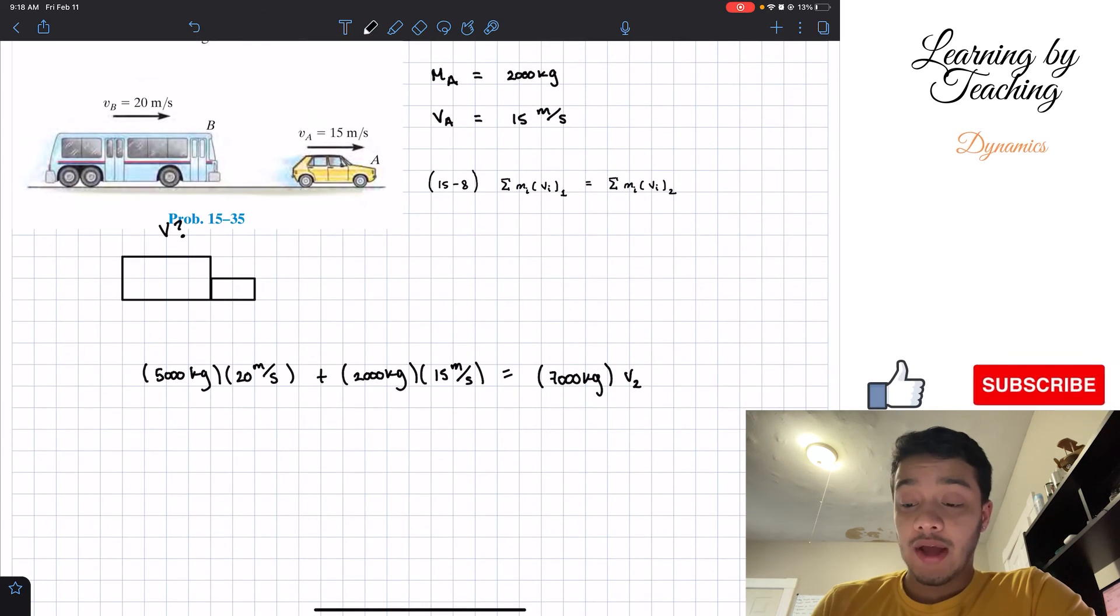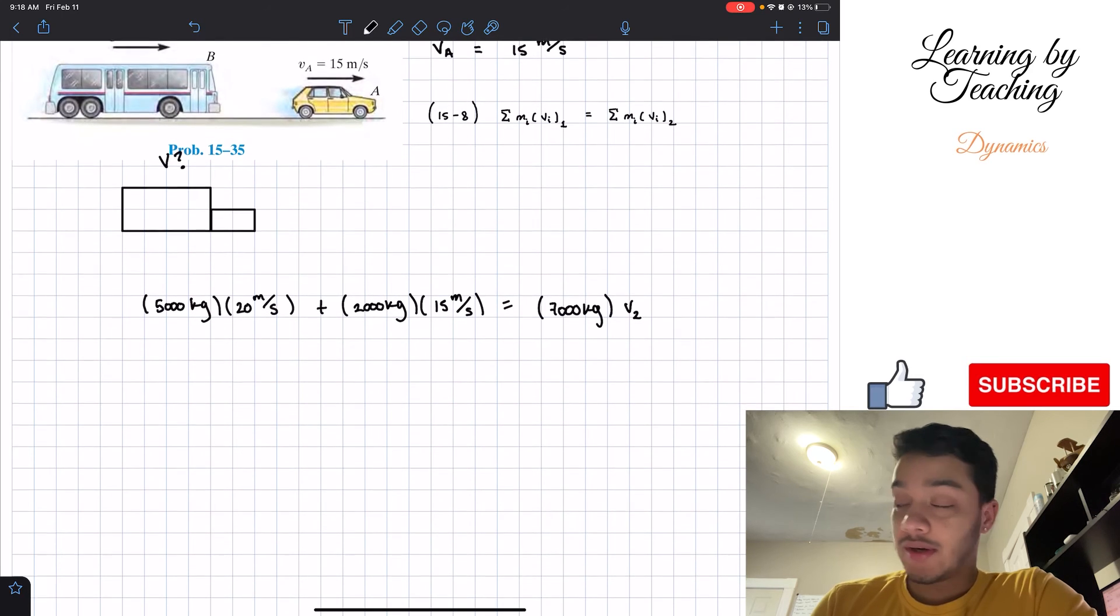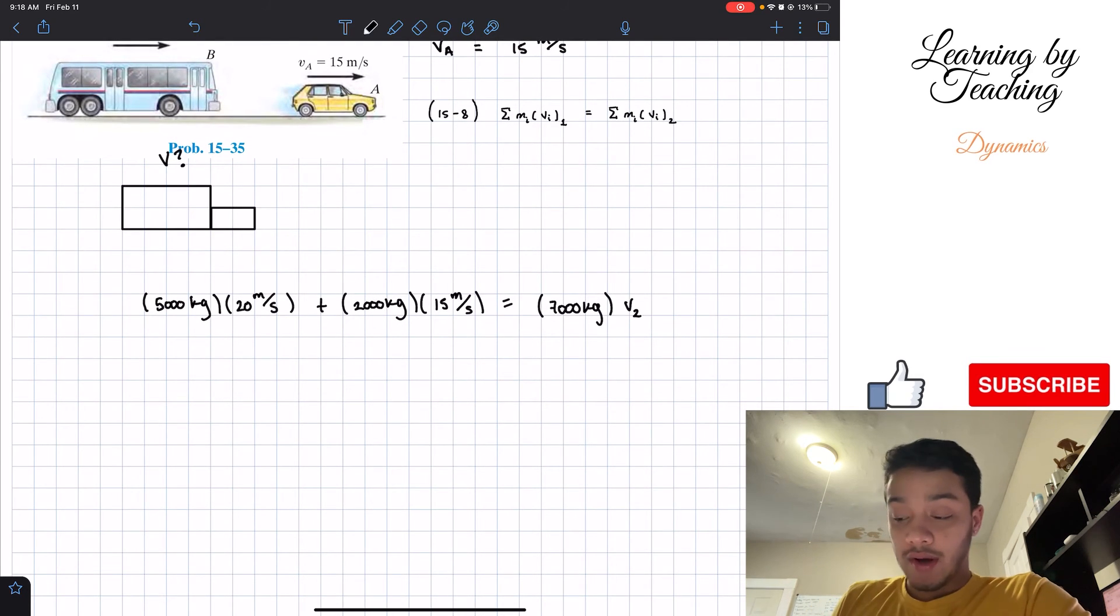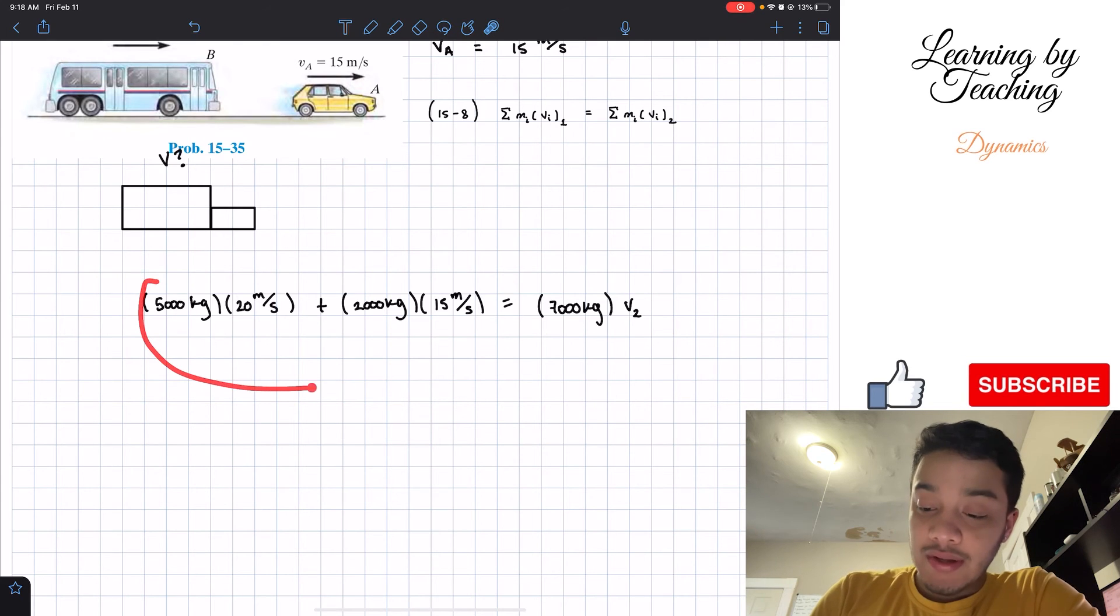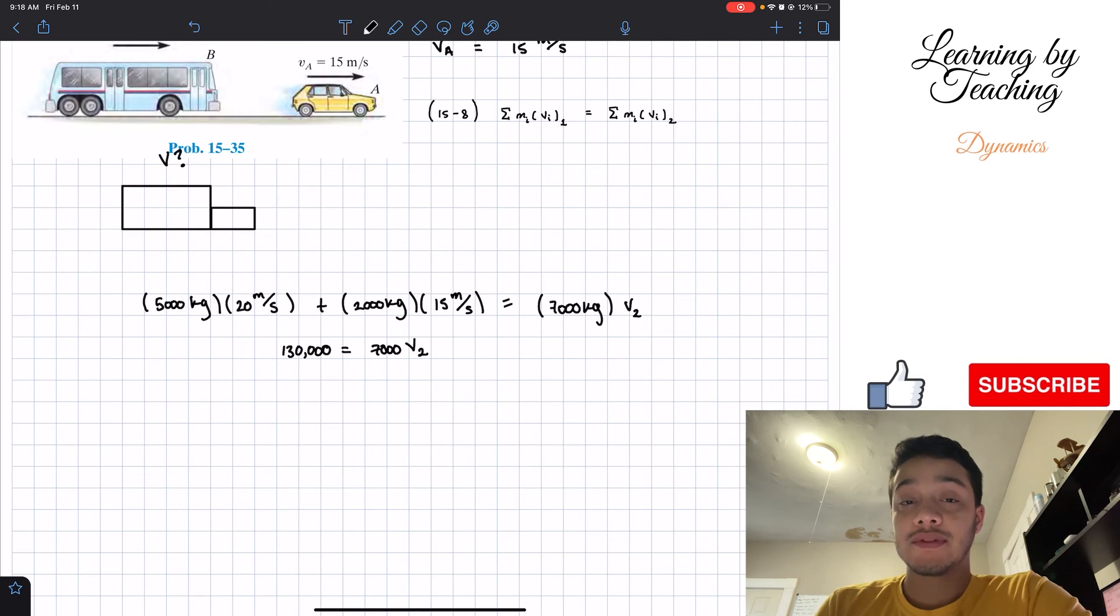And after this, all we have to do is plug it into our calculator. So if I solve for everything on my left side, I add these two guys up, we're going to have a total of 130,000. And this has to be equal to our 7000 multiplied by my velocity in my second part.